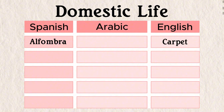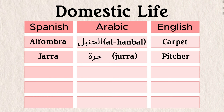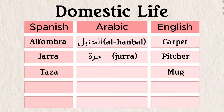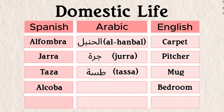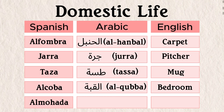The long linguistic cohabitation of Romance and Arabic left its mark on domestic life as well. Spanish has words like: alfombra (carpet) from al-ḥanbal; jarra (pitcher) from jarra — which is also where the English word 'jar' comes from; taza (mug) from ṭāssa; alcoba (bedroom) from al-qubba; and almohada (pillow) from al-makhāda. So I guess we know what language they were using in the bedroom — for pillow talk.